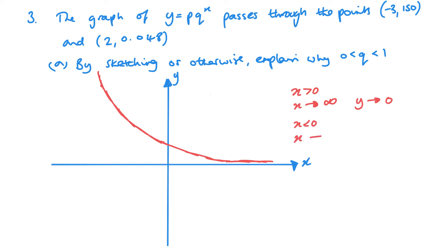What's happening here is that as x is increasing positively, as x is tending towards positive infinity, y is tending towards zero. When I look in the negative values of x, as x tends towards negative infinity, y is tending towards positive infinity. This can only happen if that base value, that value for q, is between 0 and 1. So as x is increasing, y is decreasing.